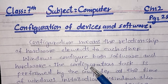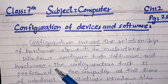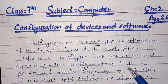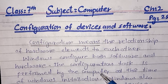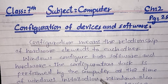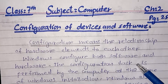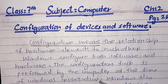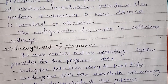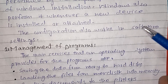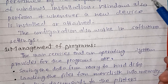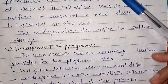Windows has software and hardware, and configuration tasks are performed by the computer at the time of Windows installation. The configuration work is created during the installation of important or compulsory devices during Windows installation.